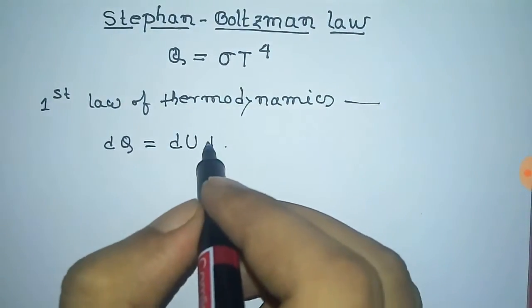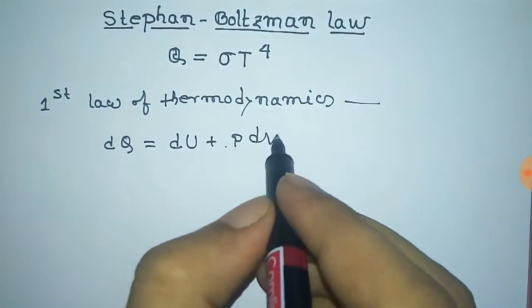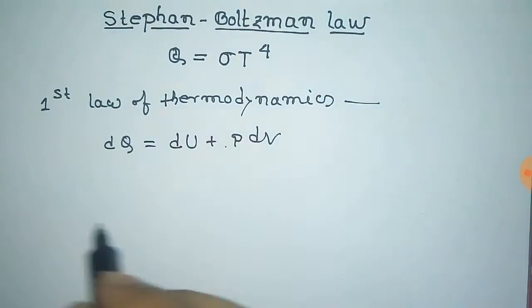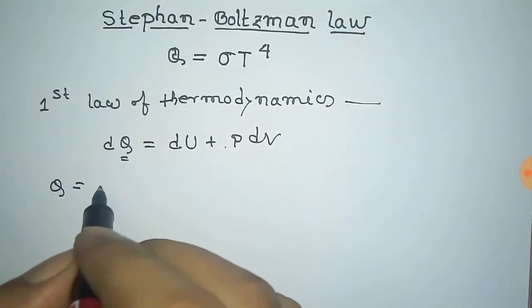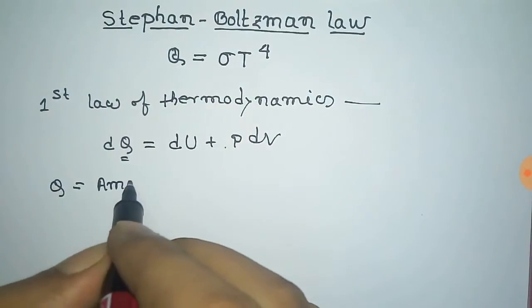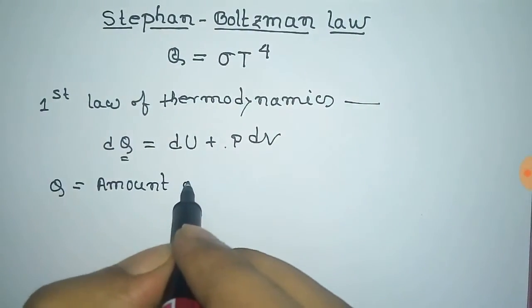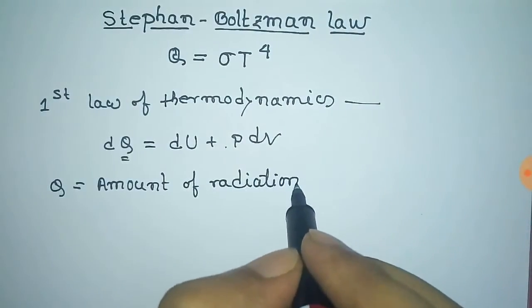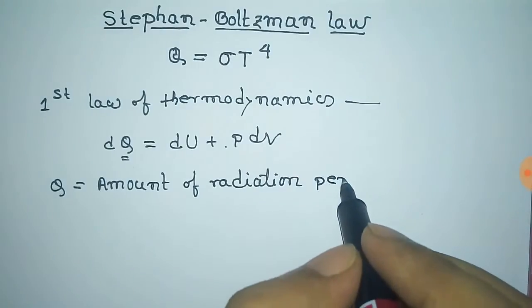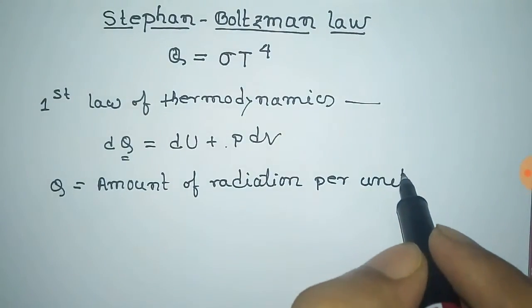The first law of thermodynamics is dQ = dU + PdV. Here, Q is the amount of radiation per unit time per unit area of the envelope or enclosure.